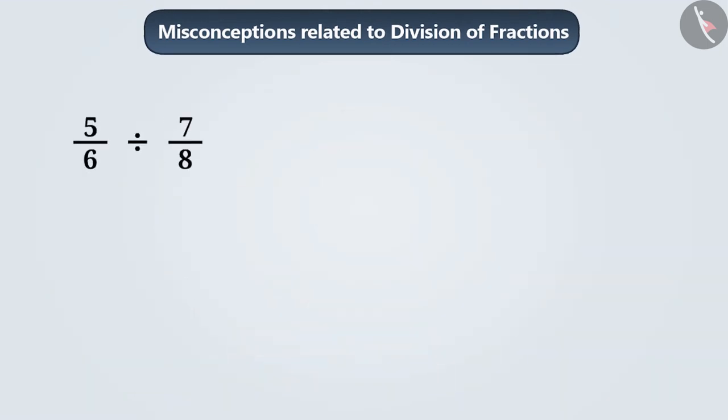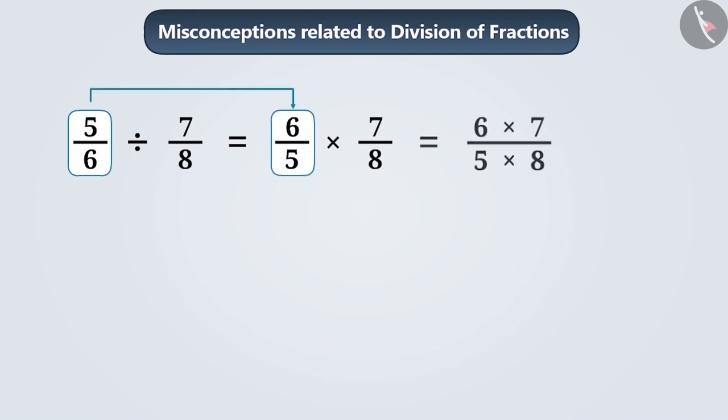Some children take the reciprocal of the first number instead of taking the reciprocal of the second number. If they do this, they will once again get the wrong answer, 42 by 40.